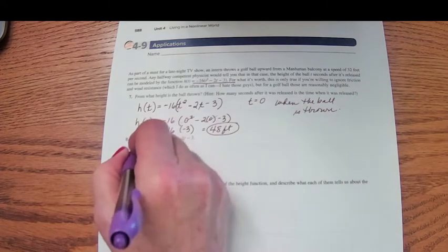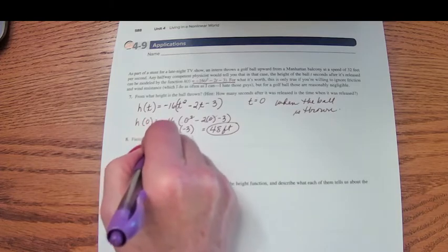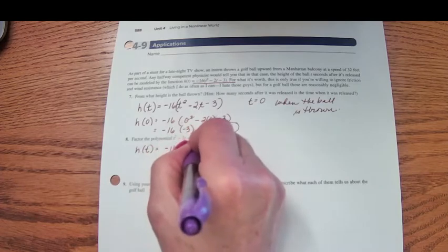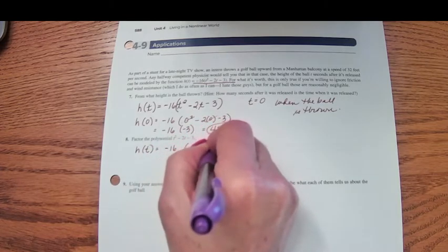All right, so we have height at time t is negative 16 times t squared minus 2t minus 3.